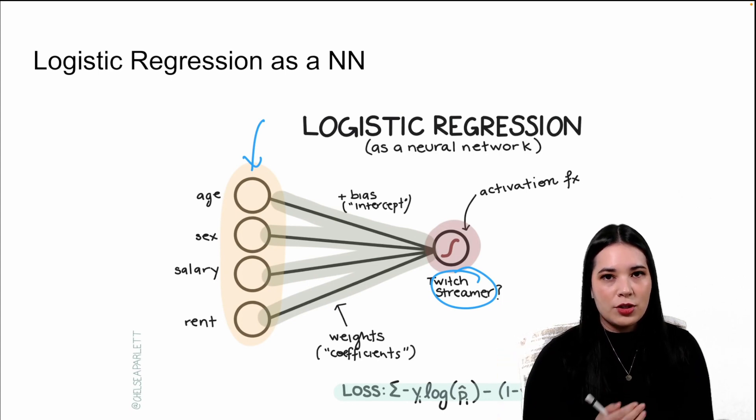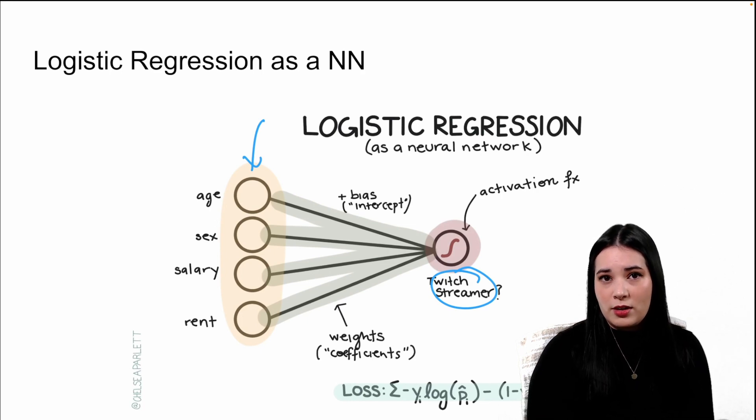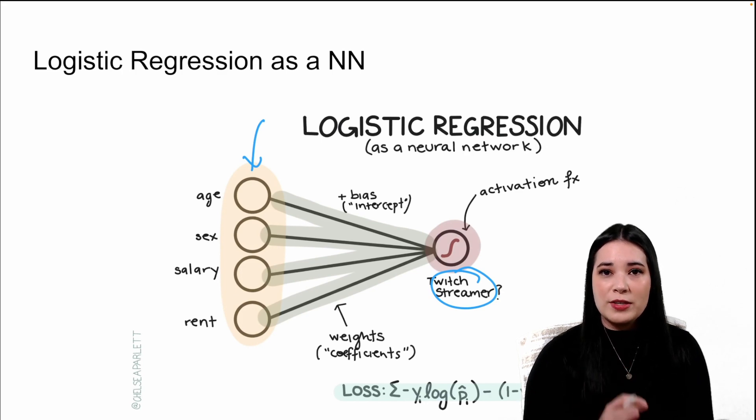As you can see, neural networks don't have to be super complicated. They're just a way of defining the structure of a model, even a model that's really simple like a logistic or linear regression. Now that we know a little bit about the structure of neural networks, we need to revisit the concept of loss functions.